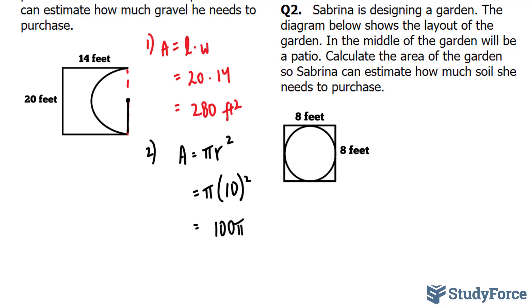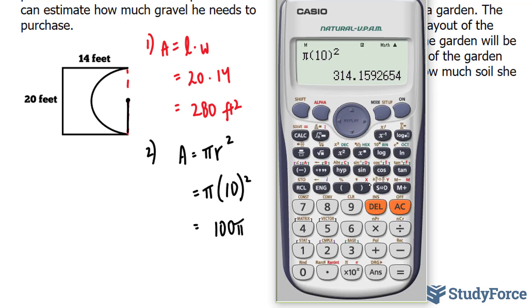Now your calculator might give you a number that looks like this. And if it does, you can write this down to up to 4 decimal places. It's up to you. I'm going to leave my number as 100 pi just because I want to be as accurate as possible.